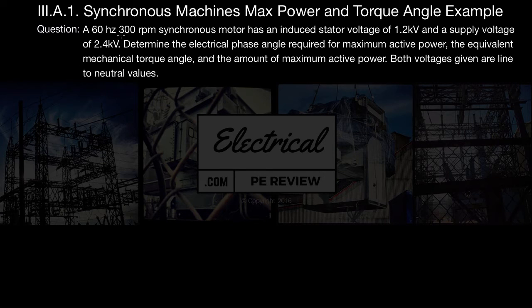The problem states: a 60 Hz, 300 rpm synchronous motor has an induced stator voltage of 1.2 kV and a supply voltage of 2.4 kV. Determine the electrical phase angle required for maximum active power, the equivalent mechanical torque angle, and the amount of maximum active power. Both voltages given are line to neutral values.